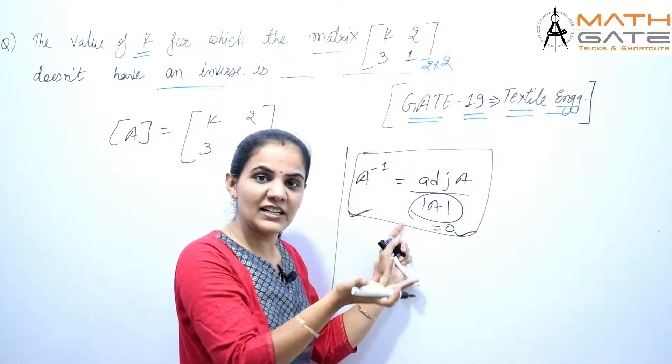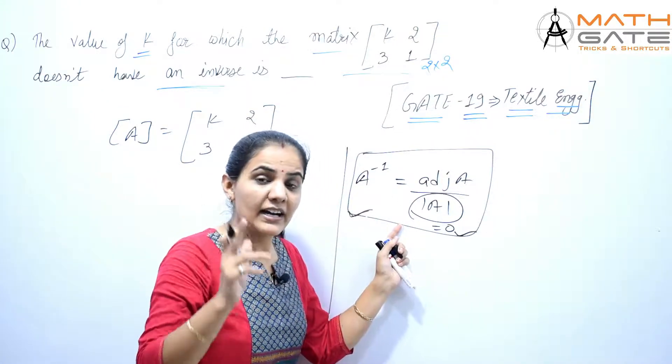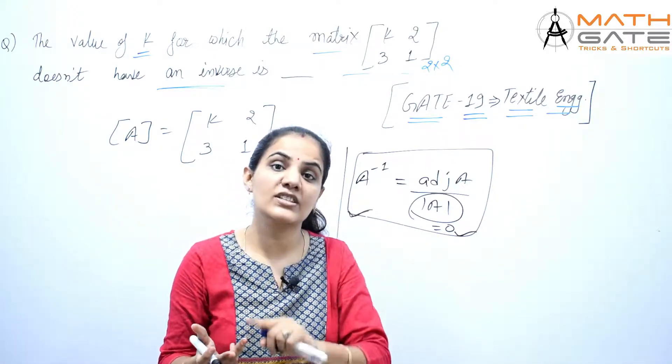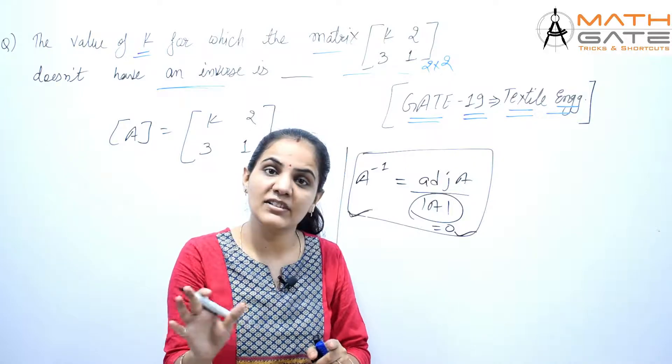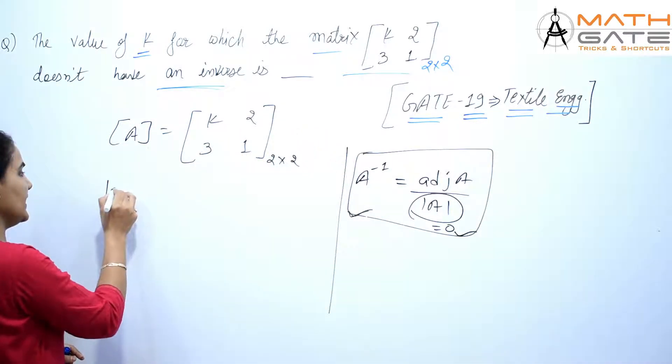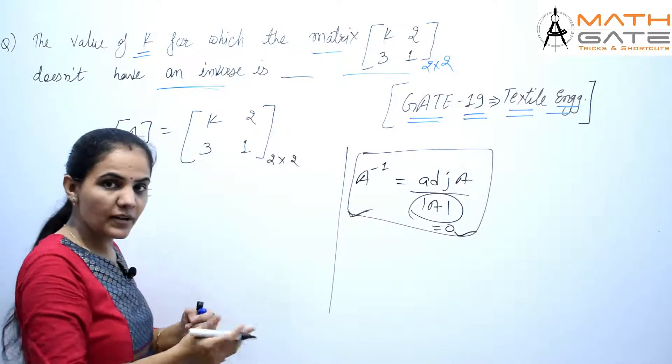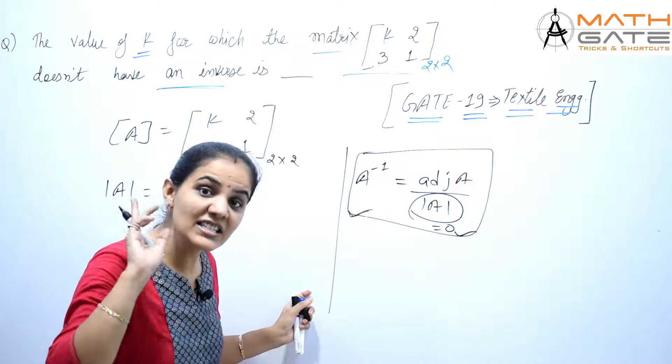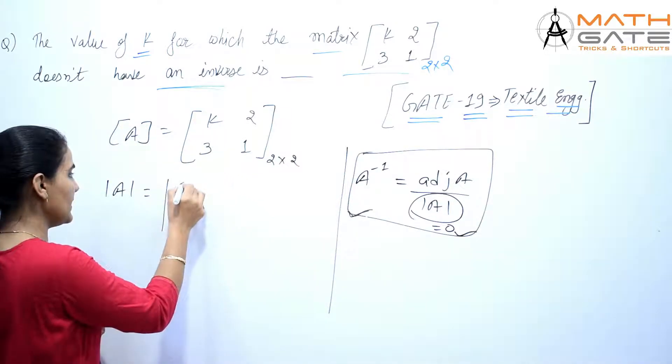If any matrix is a singular matrix or if a matrix's determinant is zero, then that matrix's inverse does not exist. So we'll do the same thing here: set the determinant of matrix A equal to zero, and it will automatically become a matrix whose inverse doesn't exist.